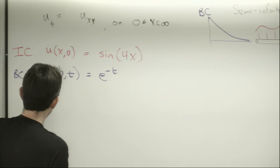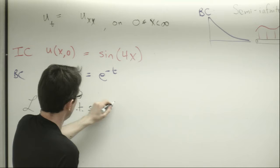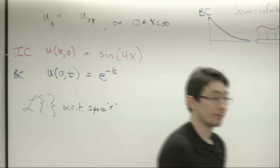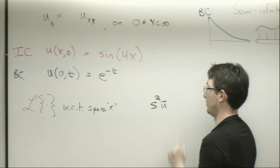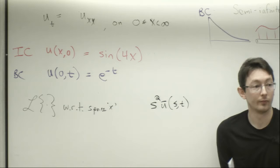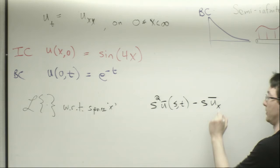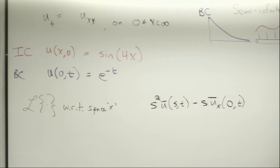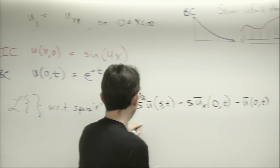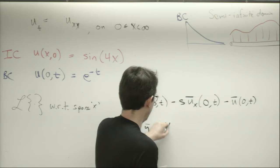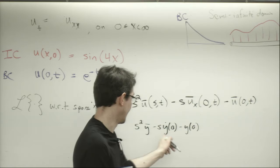Let's try Laplace transforming with respect to space. If I do that, the right-hand term becomes s² ū(s,t) minus s ū — where the first derivative in x is evaluated at x equals 0 — minus ū evaluated at x equals 0 for all times t. This is the analog of the ODE case: s² ȳ minus s·y(0) minus ẏ(0), which is what you'd get with two derivatives.